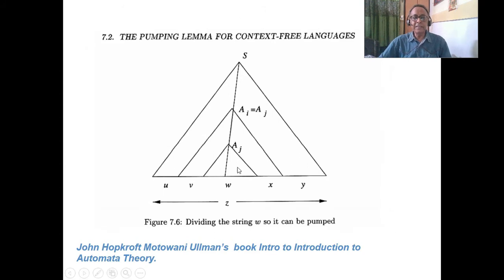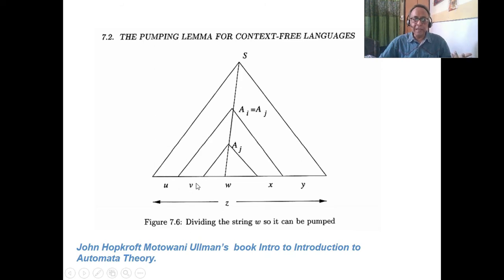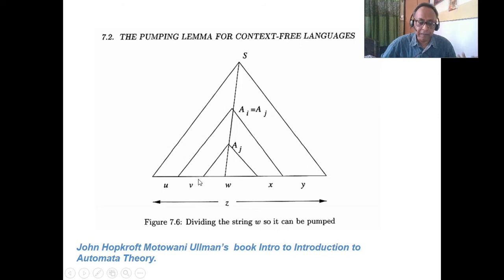So this is u v w x y, where the portion v and x can be pumped and w is not pumped — w is the middle portion, w may be blank or epsilon. Like A to the power N, B to the power N — A comes at v place, B comes at x place, no w, no u, no y. That is the simplest case of context-free grammar.